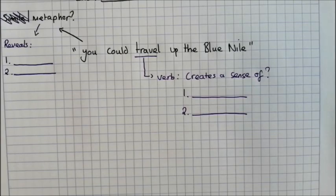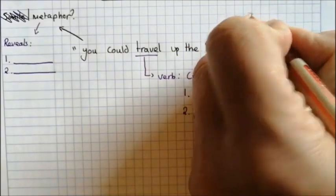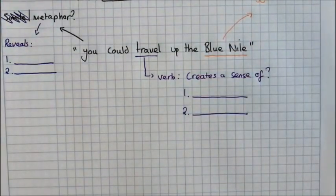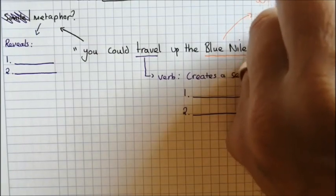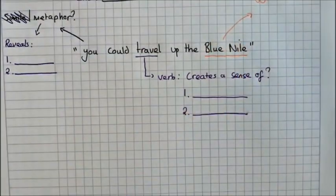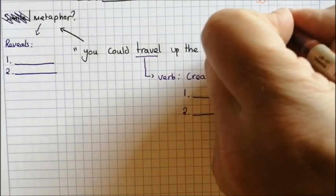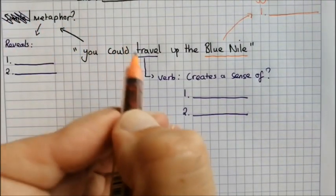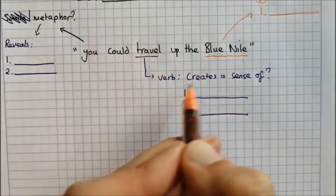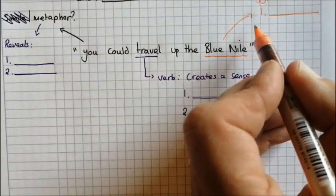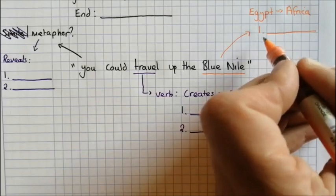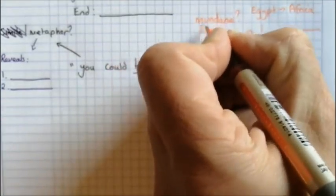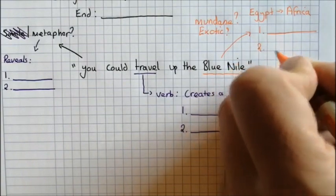And then obviously we have this particular place here, the Blue Nile, which is in Egypt. It's one of the longest rivers in the world and it's on the continent of Africa. Now what does this example of going up the Blue Nile suggest to us? The metaphor 'you could travel up the Blue Nile' reveals two things. Specifically the verb 'travel' creates a sense of what, but why the Blue Nile? Is that a normal everyday thing? Is it something that is mundane and boring or is it something that is exotic and different? Give me two things.